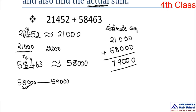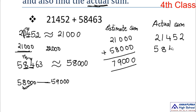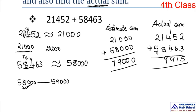Now find the actual sum: 21,452 plus 58,463. Write the numbers one by one to avoid mistakes. 2 plus 3 is 5; 5 plus 6 is 11, carry 1; 4 plus 4 plus 1 is 9; 1 plus 8 is 9; 2 plus 5 is 7. The actual sum is 79,915. Our estimated sum of 79,000 is very close to the actual sum of 79,915.